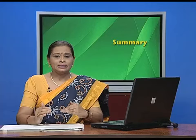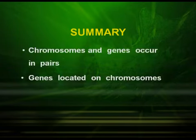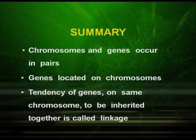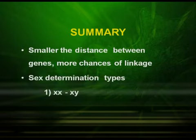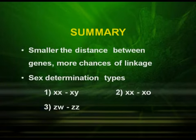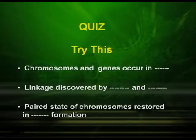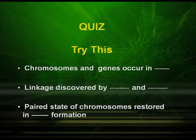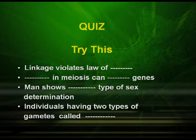Now let us come to the summary of the topics. First, chromosomes and genes occur in pairs. The genes are located on the chromosomes. The tendency of genes on the same chromosome to be inherited together is called linkage. Smaller the distance between the genes, more is the linkage. Sex determination types: XX/XY, XX/X0, ZW/ZZ, Z0/ZZ. Now I have a small quiz for you. The chromosomes and genes occur in [blank]. Linkage was discovered by [blank] and [blank]. The paired state of chromosomes is restored in [blank] formation. Linkage violates the law of [blank]. [Blank] in meiosis can [blank] genes. Man shows [blank] type of sex determination. Individuals having two types of gametes are called [blank].